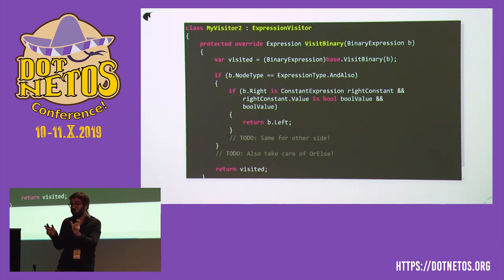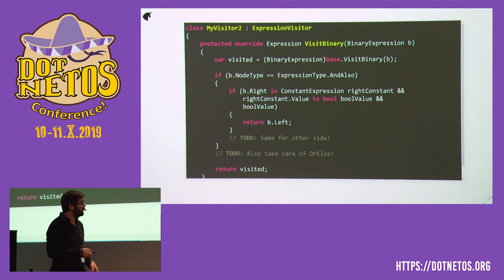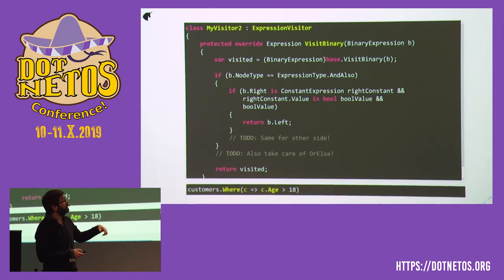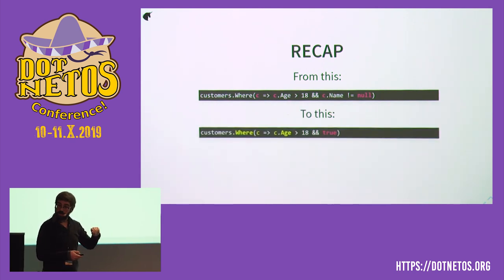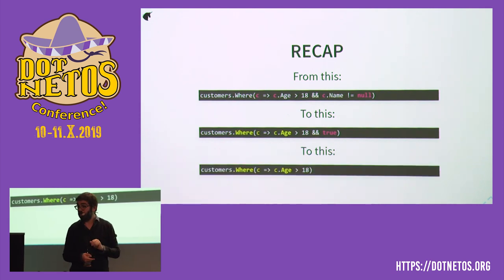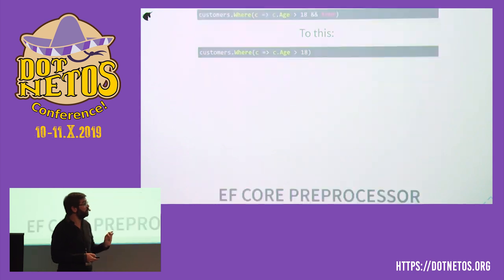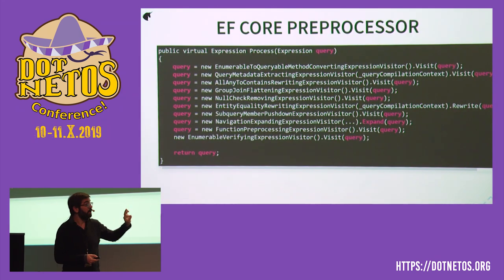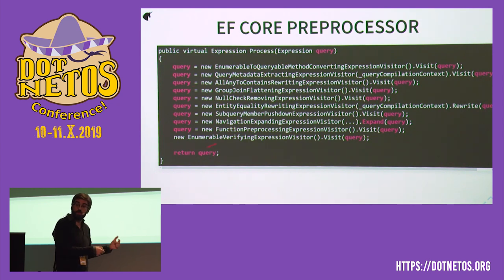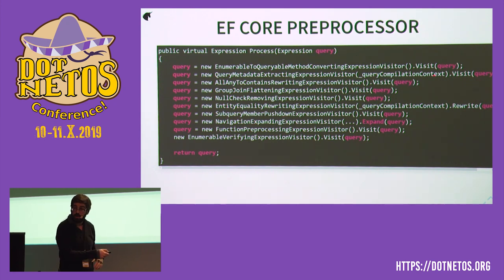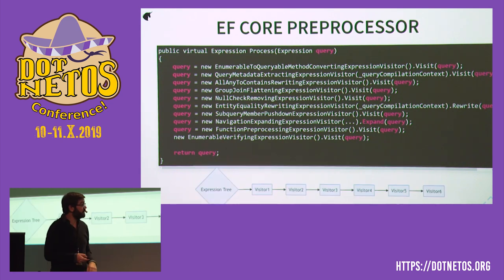So what happened: we now have age > 18 AND true. Because we want to get rid of that true as well, we have another visitor that identifies AND expressions. When it finds on the right side a constant bool that is true, it returns just the left side. And we get the simplified expression. One visitor made the tree into the intermediate form, and another visitor simplified it further. This is exactly how the whole thing is architected. If you look at actual EF Core code, at some point there's a chain of visitors — there are a lot of them. Each one gets a query, visits, does something, and returns. The entity equality rewriting expression visitor is the one I described before.